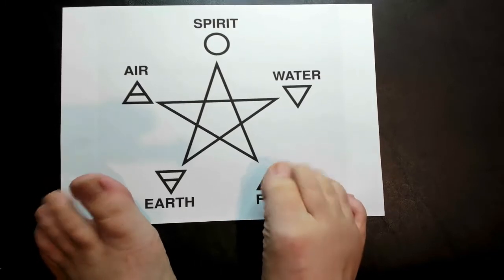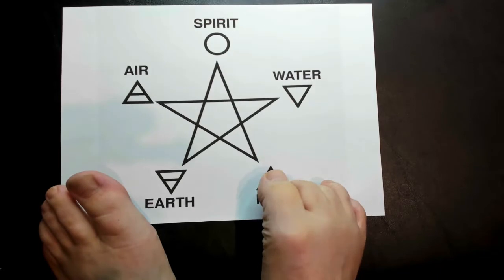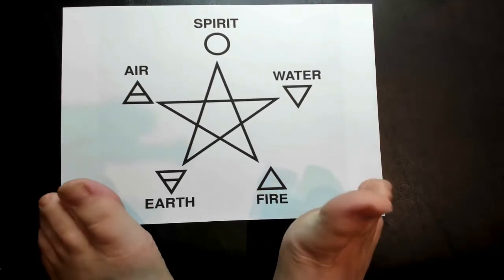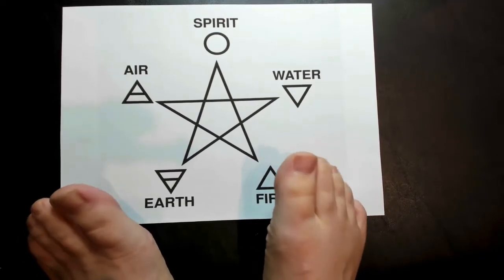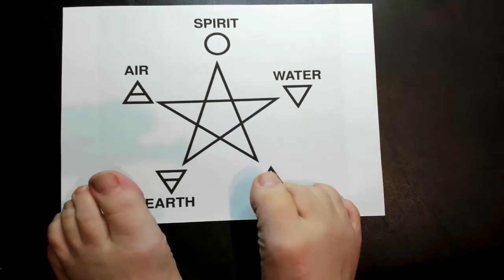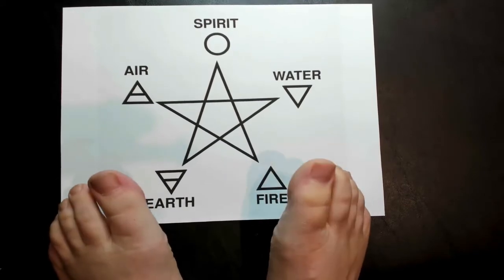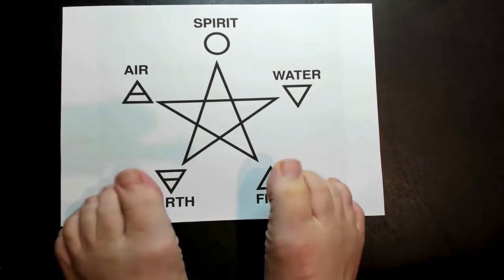These elements relate to aspects of astrology, as well as giving us insight into someone's personality. Today, I'm going to be doing some tracing with my toes and reading about the 12 zodiac signs and how they're related to the four elements.